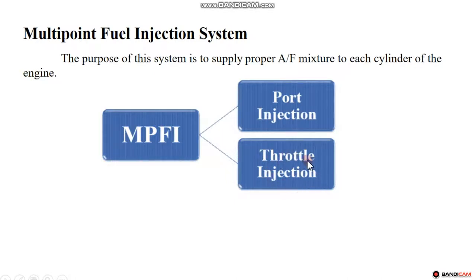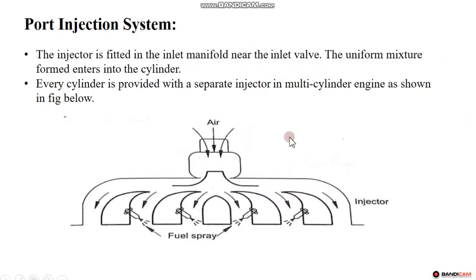In a carburetor, fuel is delivered to a particular area where the pump splits the mixture. In port injection, every individual port has its own pump. An individual injection system is used to inject fuel at each port. This is the key difference — this is the port injection system, and it connects to the engine system.